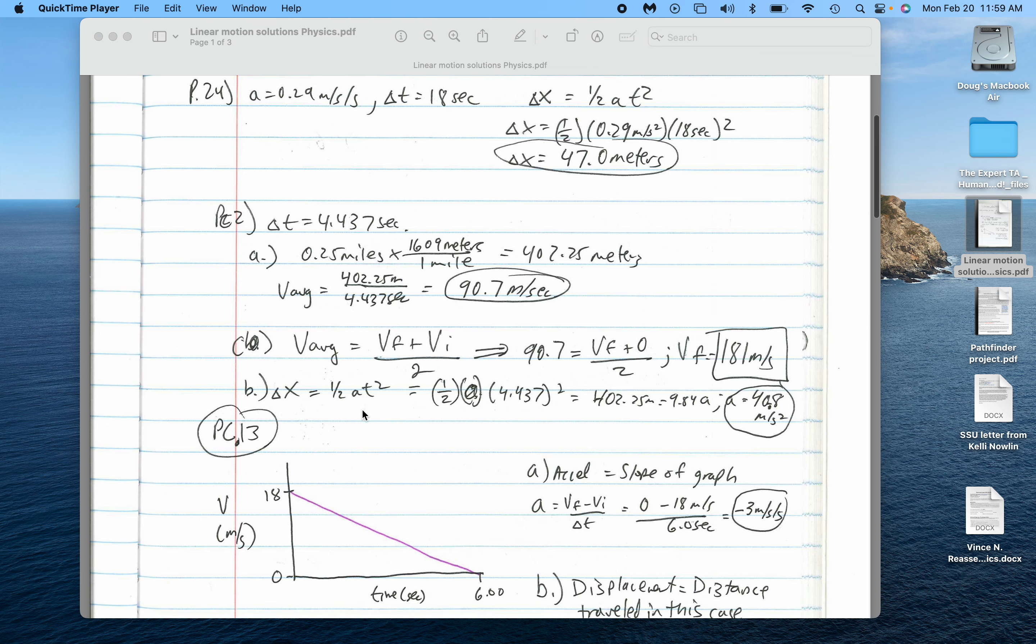For part B, if you're looking at figuring out the acceleration, I would use this formula again and rearrange to solve for A. So 402.25 equals one-half times A times 4.437 squared. Algebraically rearranged that, I get 40.8 meters per second squared.